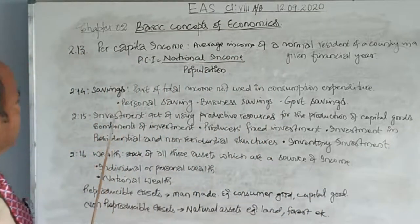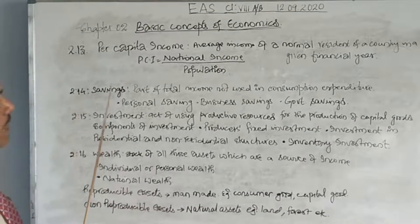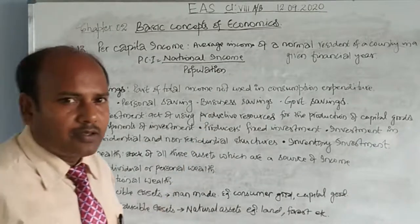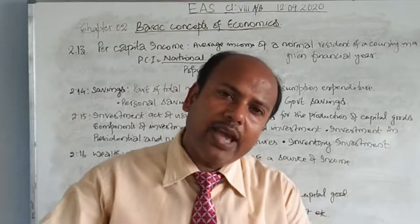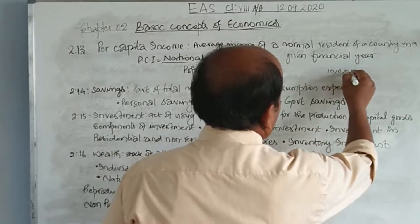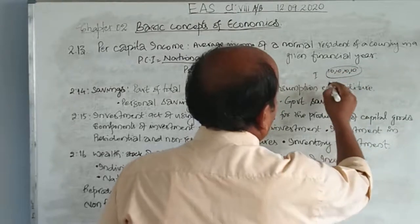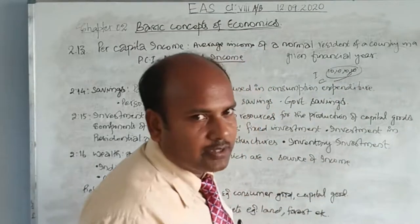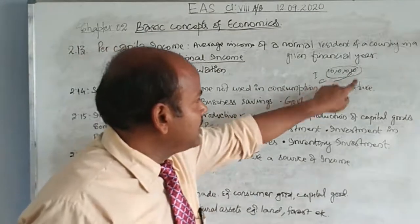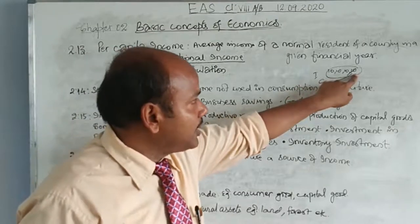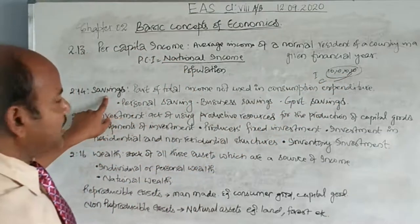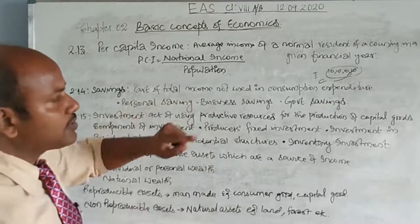The next topic is 2.14 — saving. Saving is that part of total income not used in consumption expenditure. We have our income and we have our expenses. For example, if my income is 40 and my consumption is only 10, then the remaining 30 is my saving. So saving is the part of total income not used on consumption expenditure.